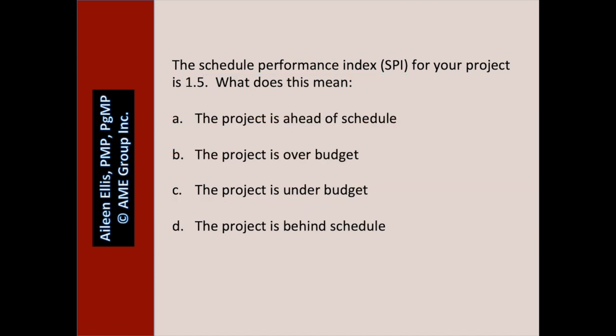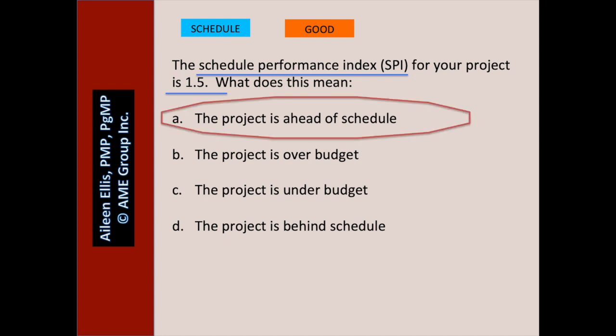The schedule performance index for your project is 1.5. What does this mean? Pause the video and answer the question. Is this about schedule or cost? Schedule. 1.5 — is that good or bad? That's good. A: the project is ahead of schedule — yes, that's true. B: the project is over budget — we don't know. C: the project is under budget — we don't know. D: the project is behind schedule — no, it's not behind schedule because the schedule performance index is greater than 1.